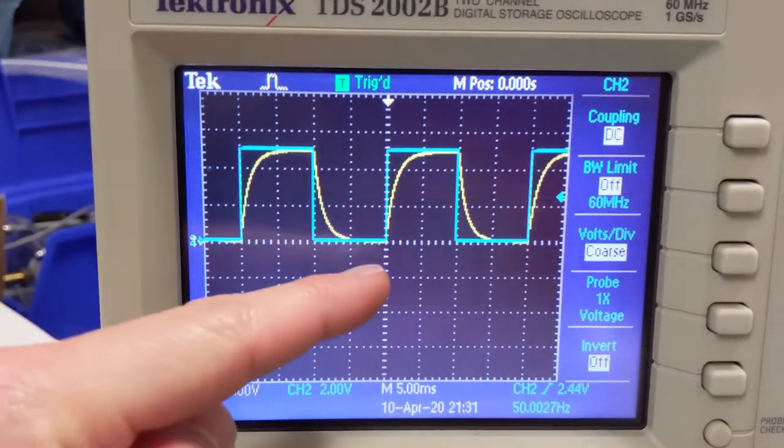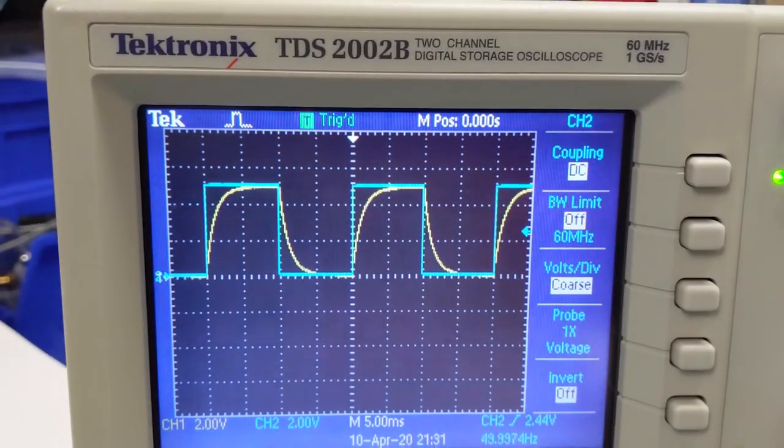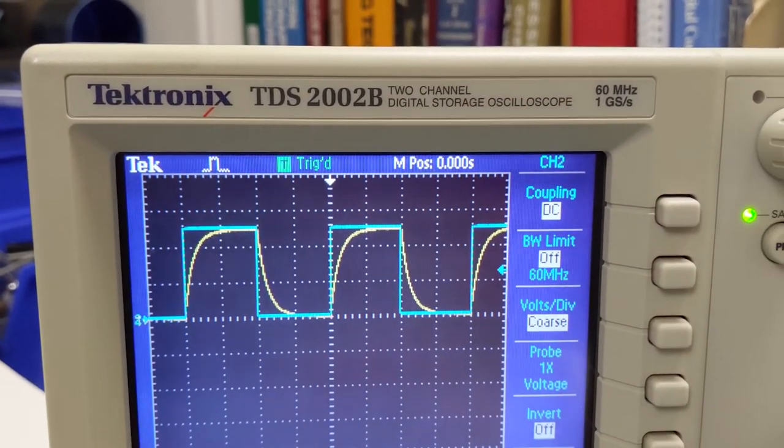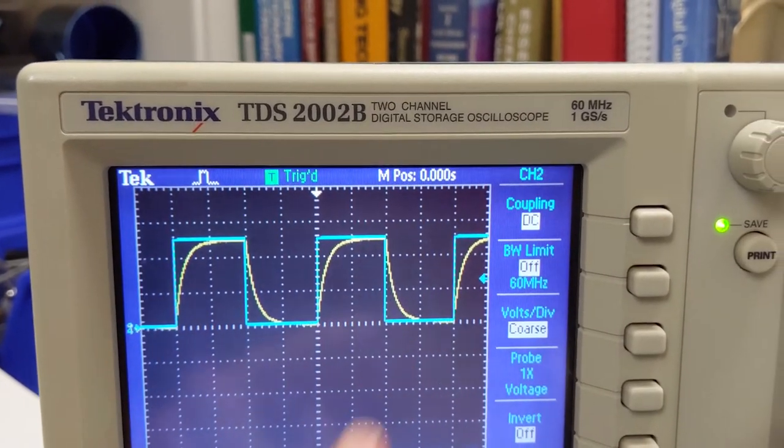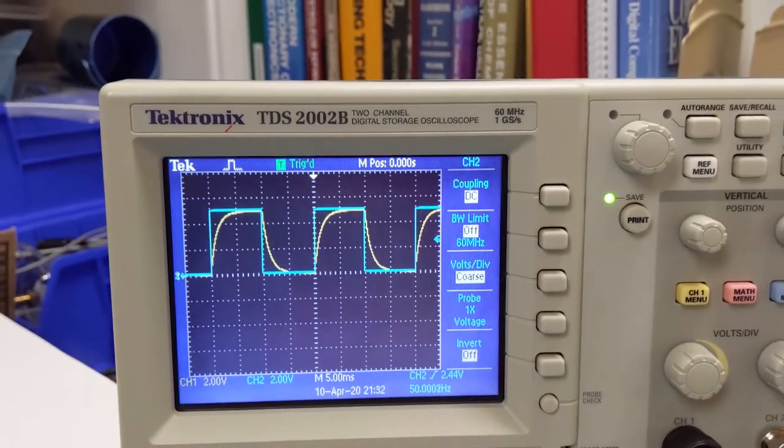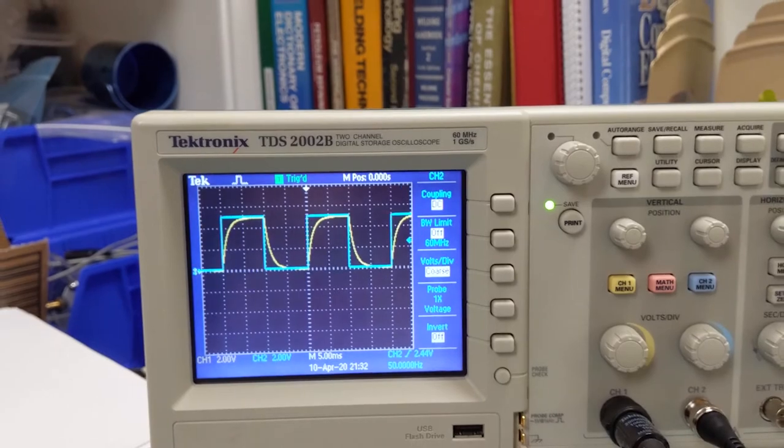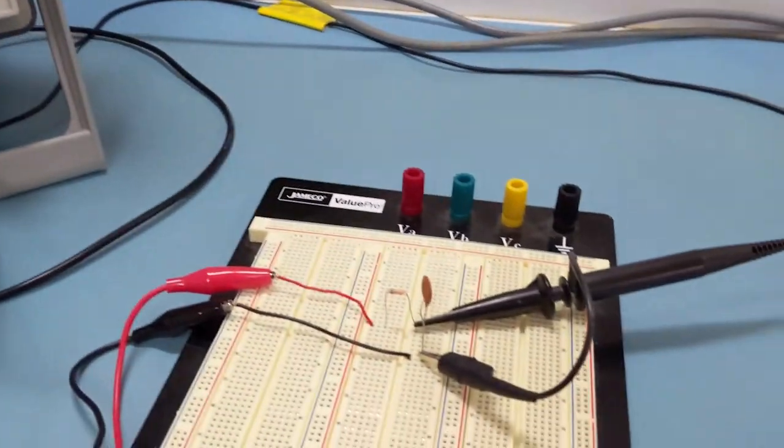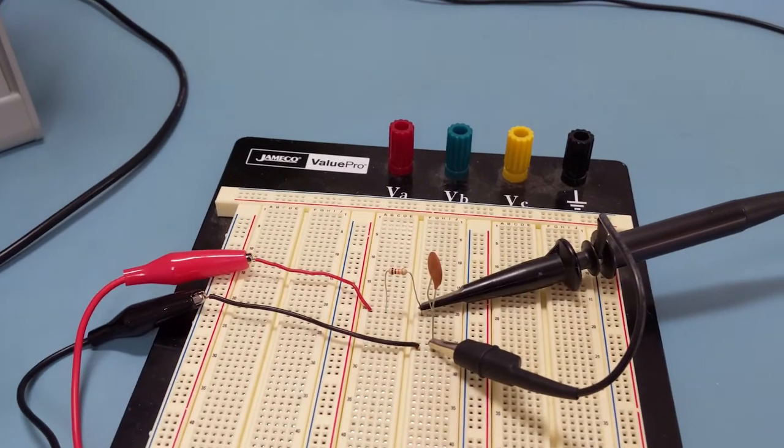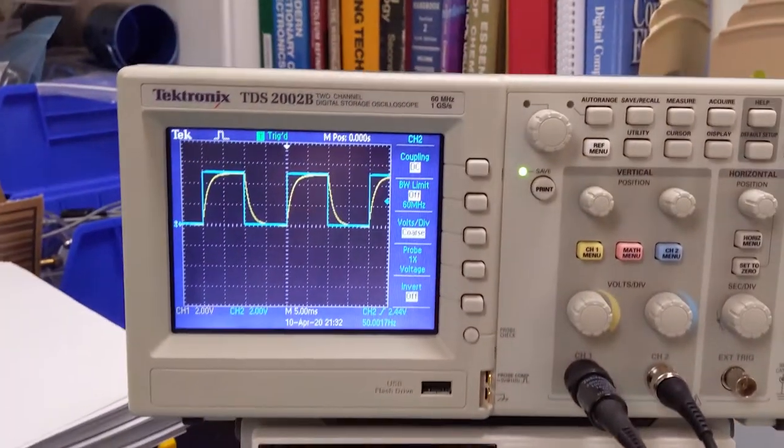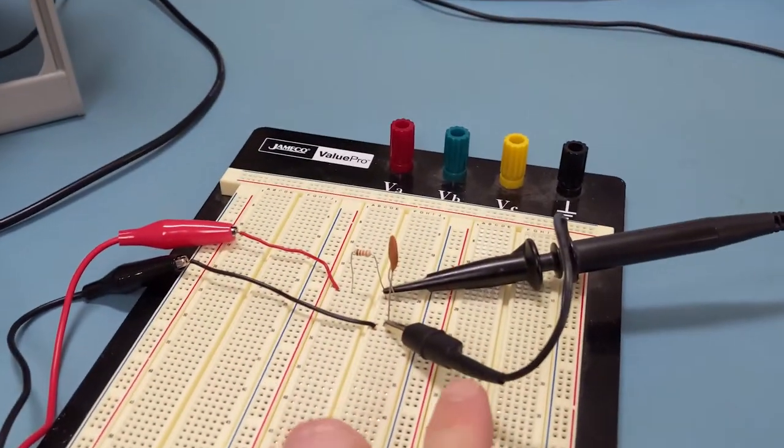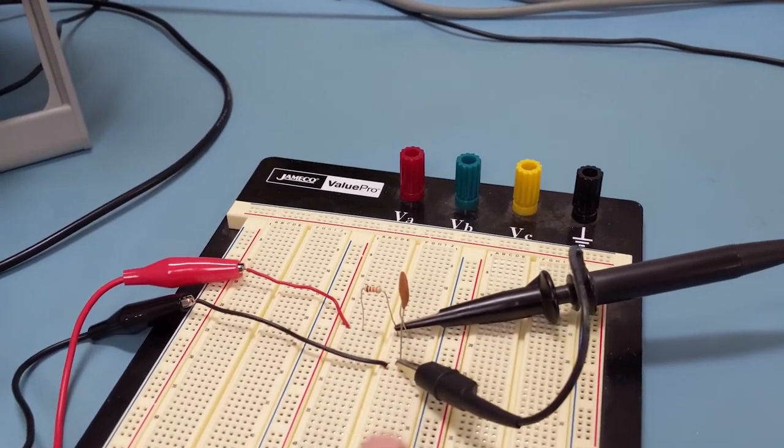And you can see that when the signal goes into the capacitor, it charges. And then when it drops down to zero, it discharges. Kind of cool to see those two overlapping, and pretty cool to be able to see what this circuit's doing. So let's do some math to figure out what the capacitance is of this capacitor.